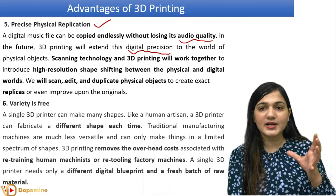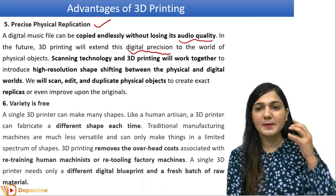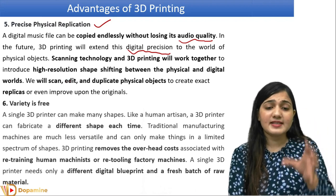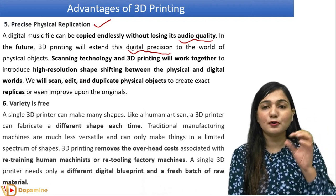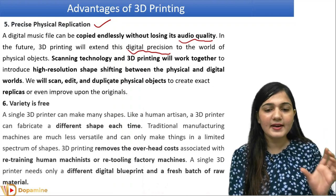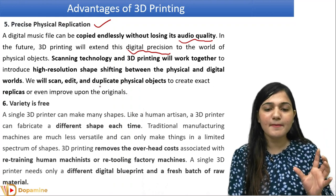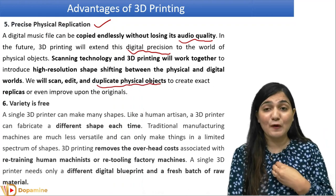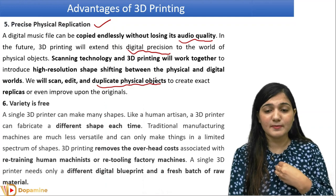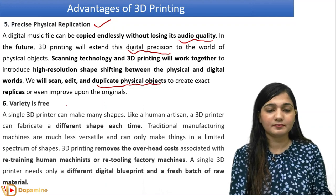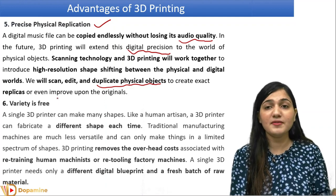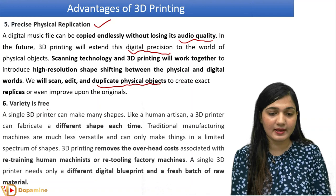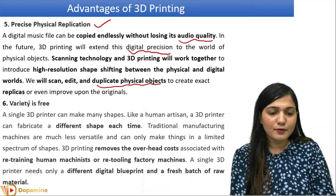Shape shifting between the physical and the digital world can easily take place. If we have any object — let's say I have a jewelry design — I can scan it, edit it, and get a duplicate physical object according to my customized design. Or if I need the same object, I can also get the same replica.